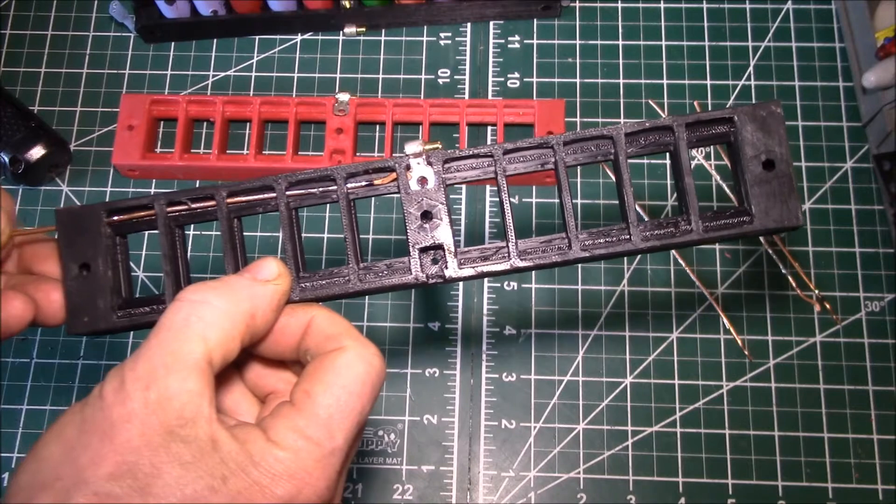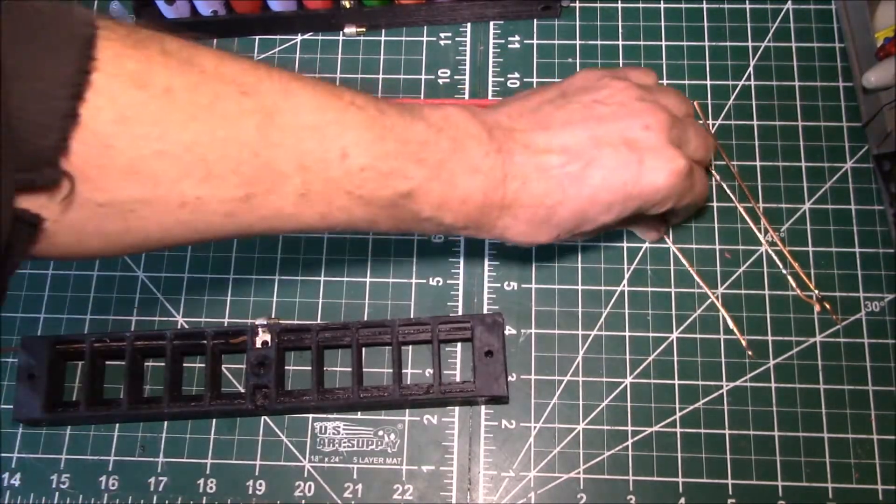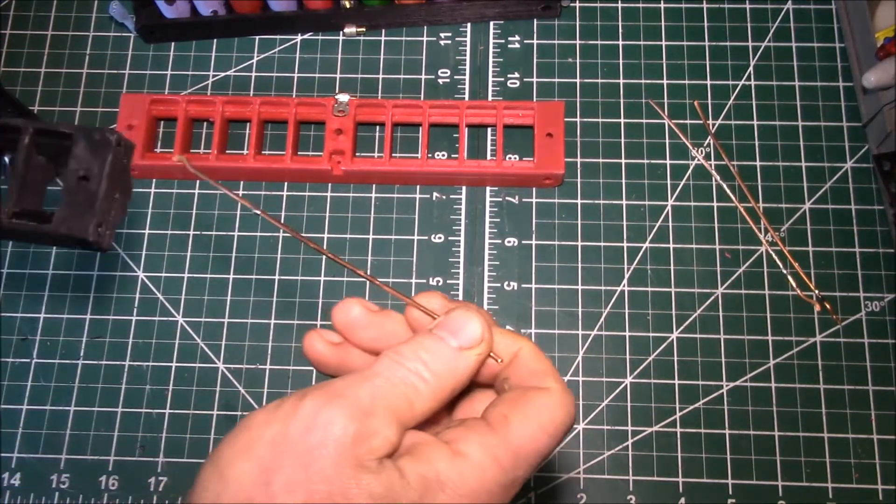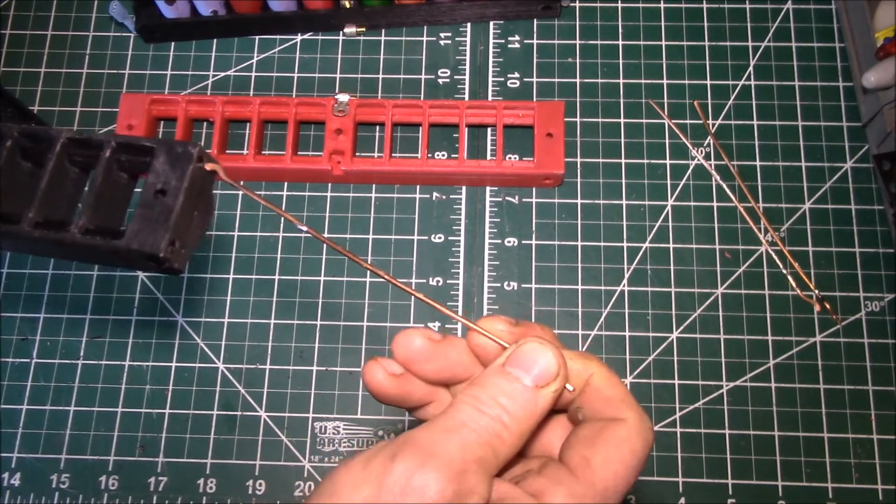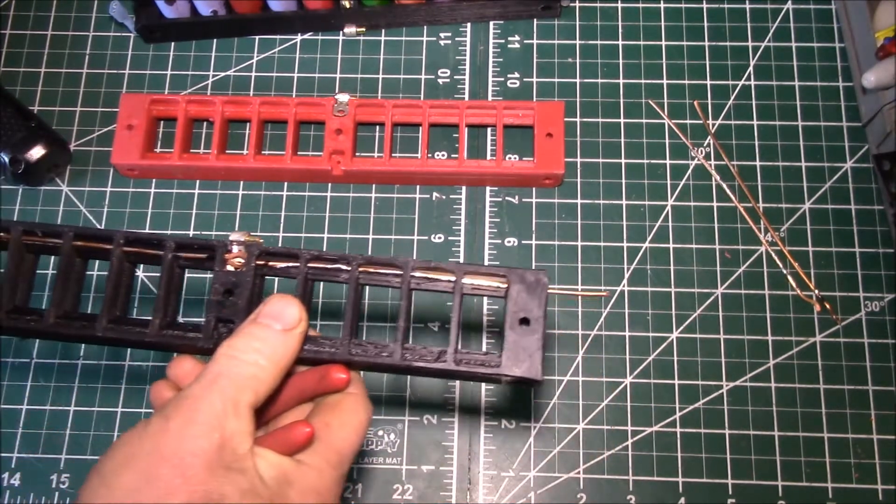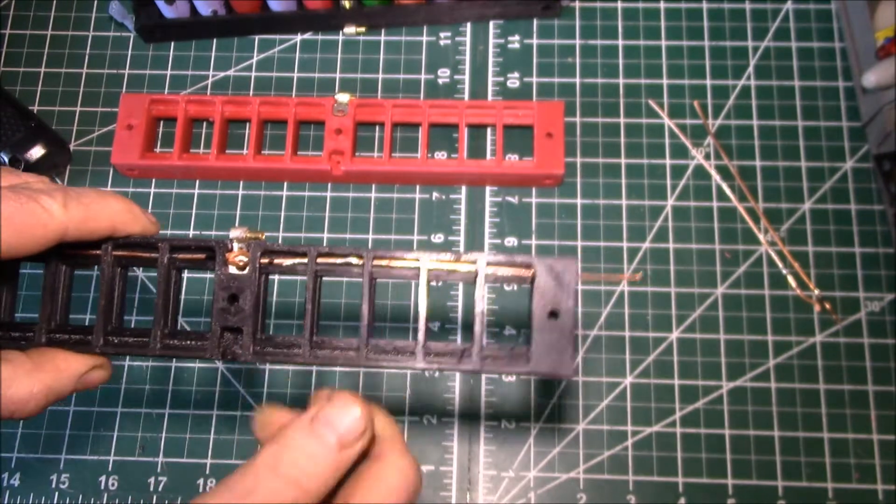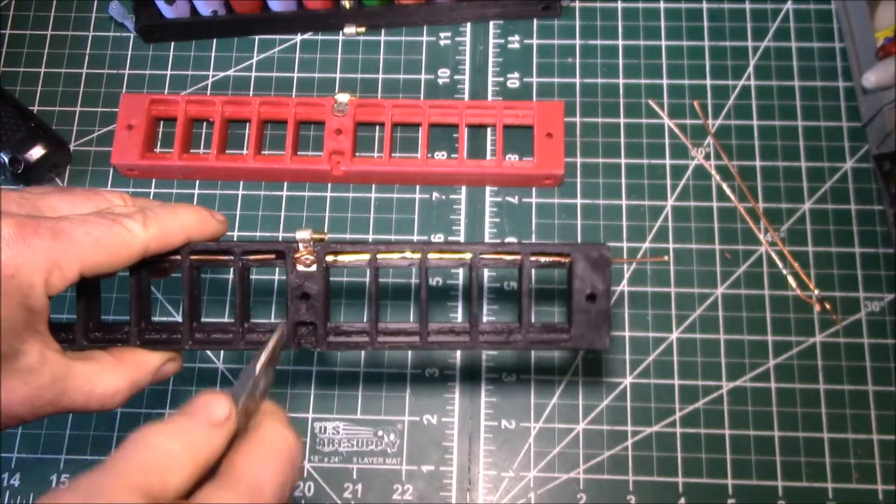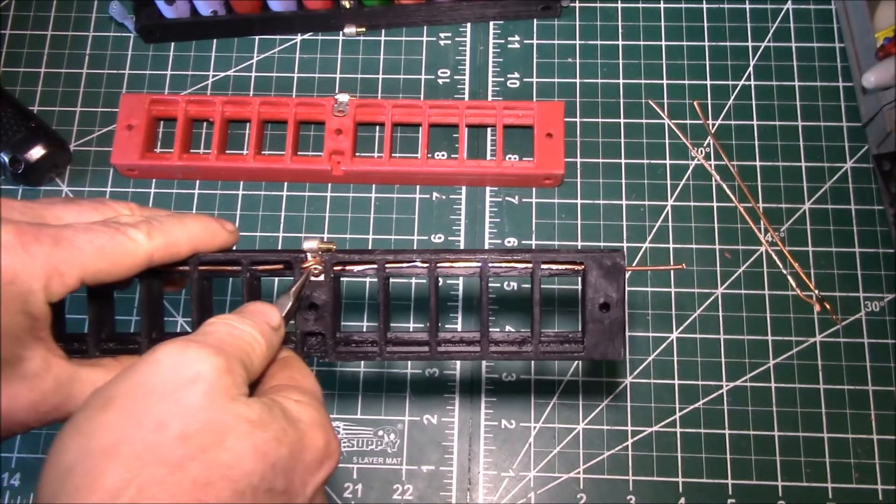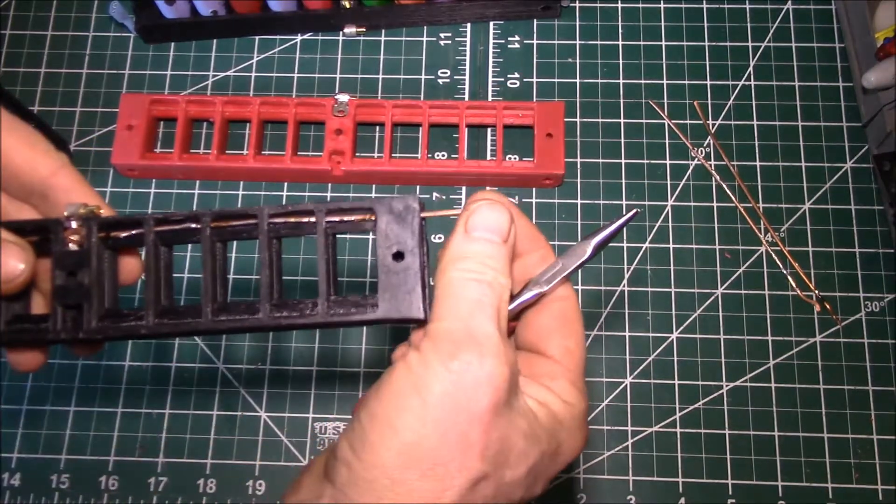I have it just bent enough to let me get through the hole there because you can't go too big, otherwise you can't feed the wires in. I feed one from this side and you can see it's a pretty tight fit. I'm trying to get the wires to fit around that screw hole.